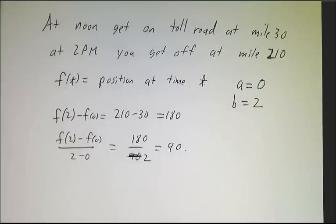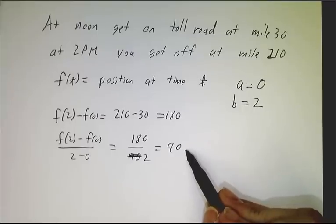So if when you get to the toll booth at the other end, they hand you a speeding ticket along with your receipt for your toll, they've got you nailed. You were averaging 90 miles an hour, so at some point you had to be doing exactly 90 miles an hour.